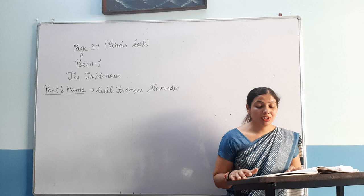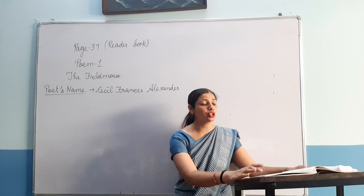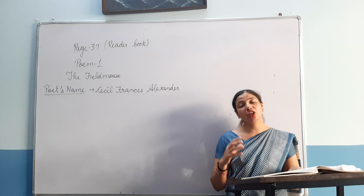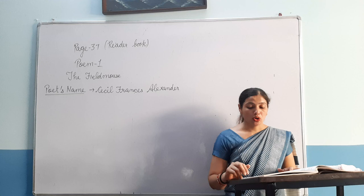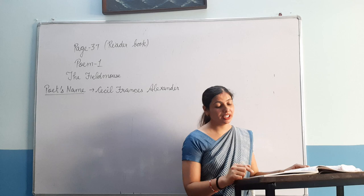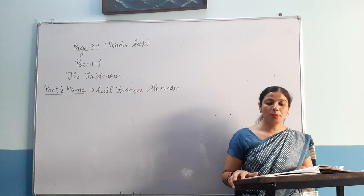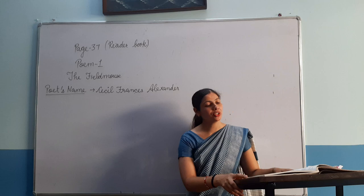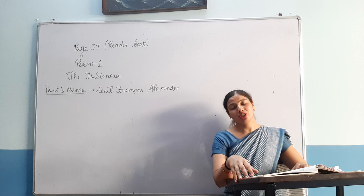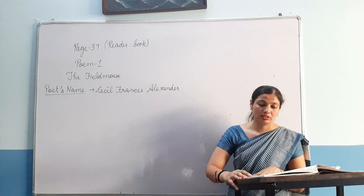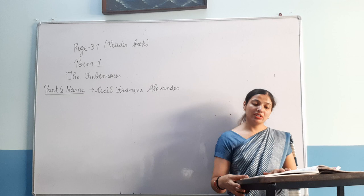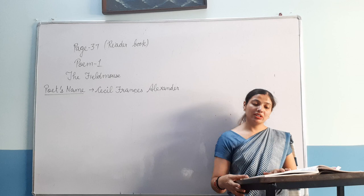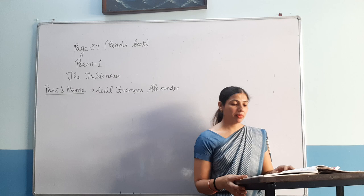Now let's look at the summary of the poem. In the first stanza we can see that the poet is telling the eating habits of the field mouse — what does he eat? He eats the acorns and the berries which have fallen down from the tree. And in the third and fourth lines the poet is telling the appearance of the mouse: the mouse has soft fur, brown in colour, and the eyes are round and merry.